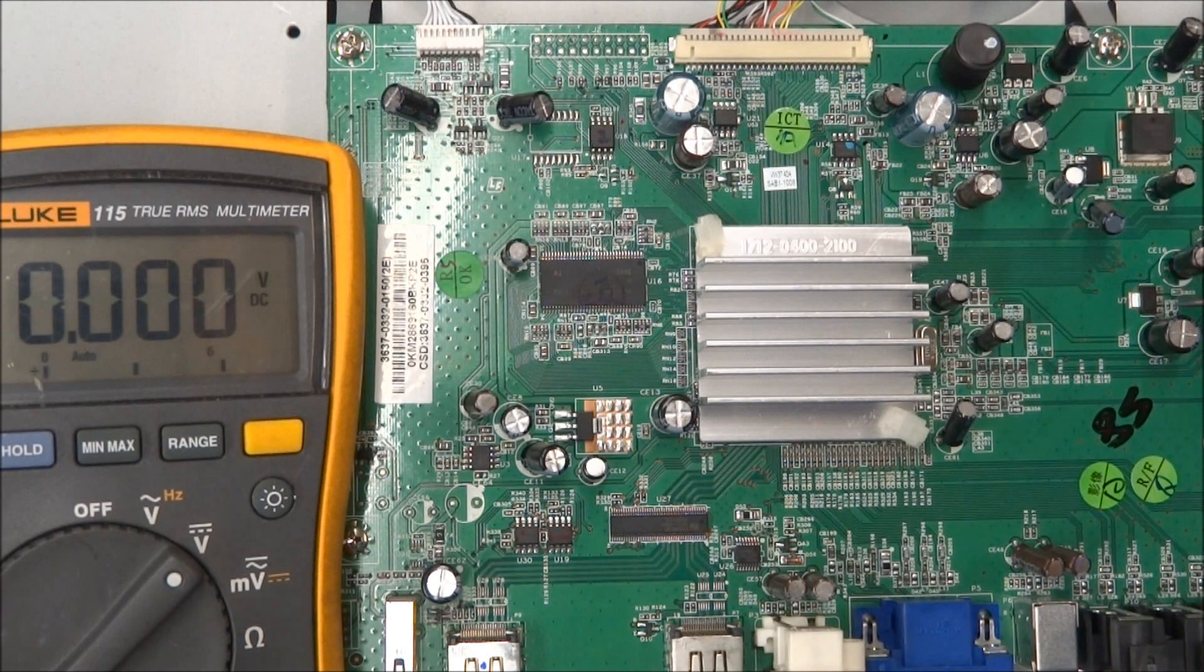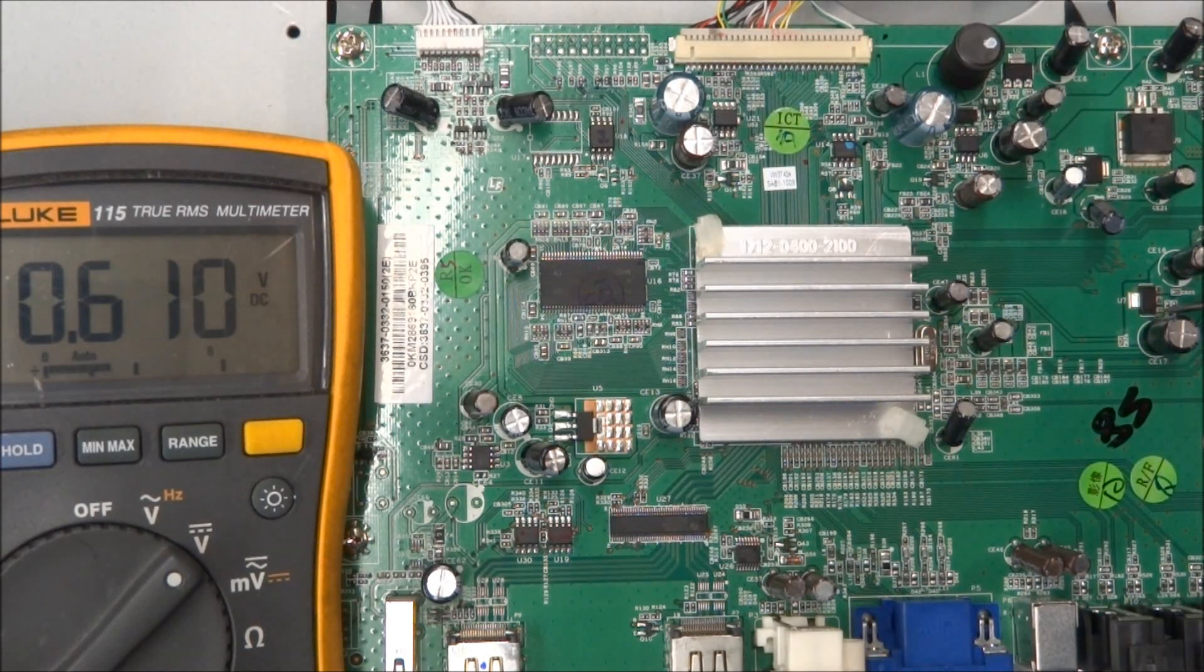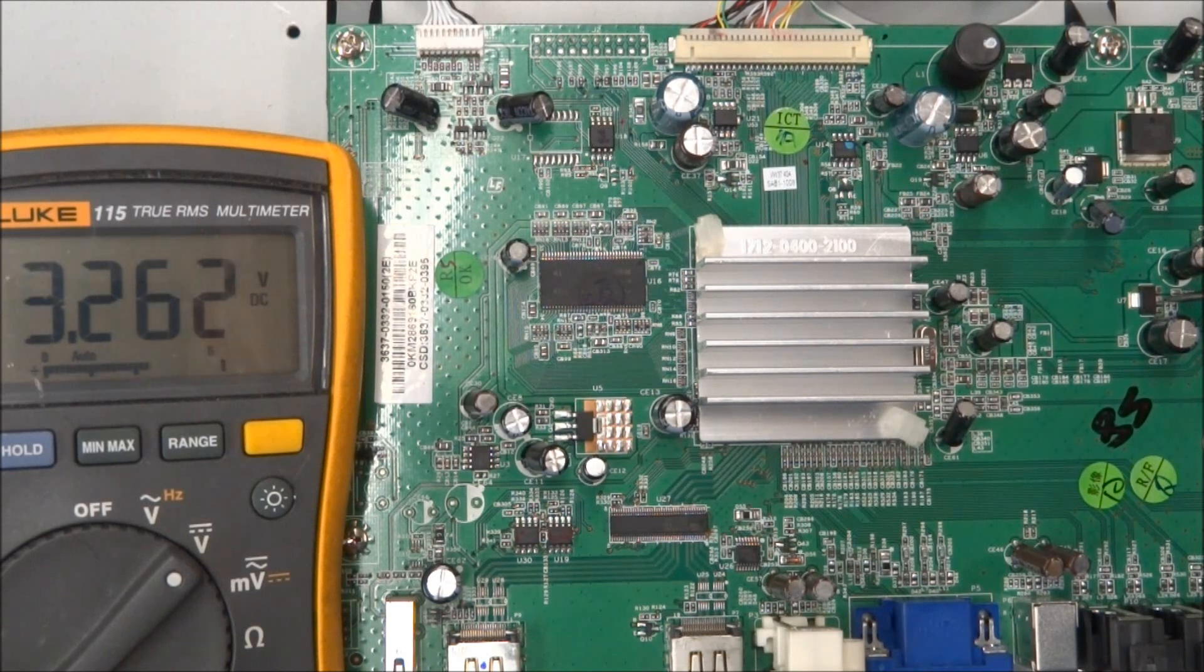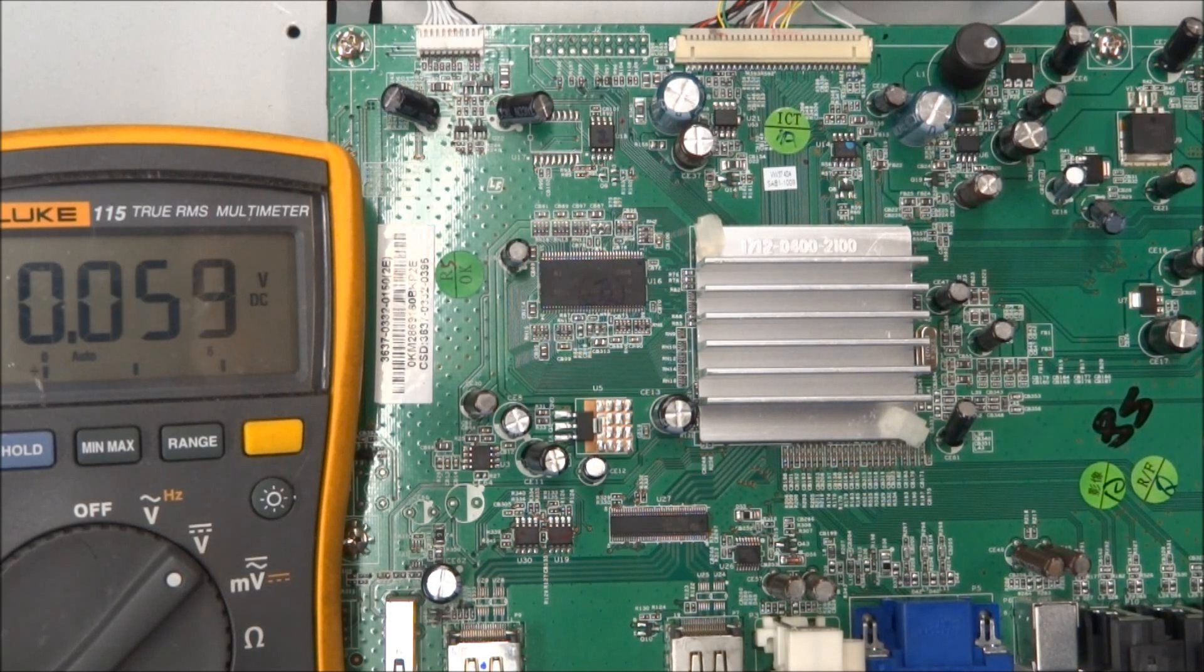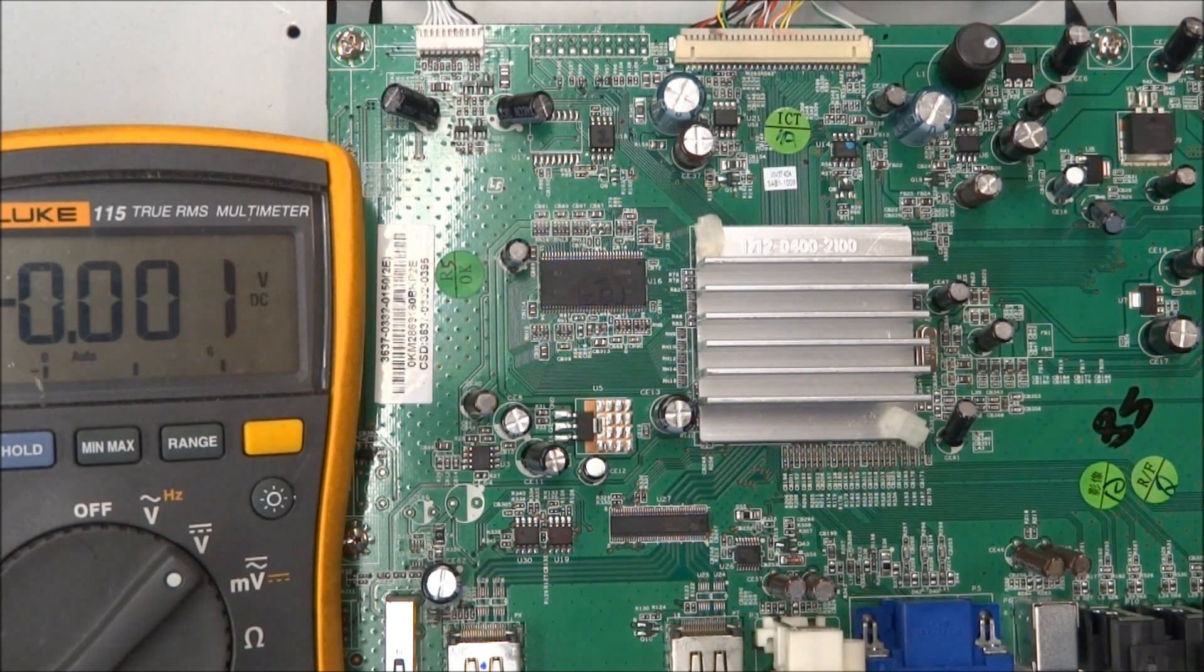Next, we'll go over to this one over here labeled U7. Adjustment, 2.065. Output, 3.321. Input, 5.06. Let me move the camera over to the other side of the board and we'll look at those.